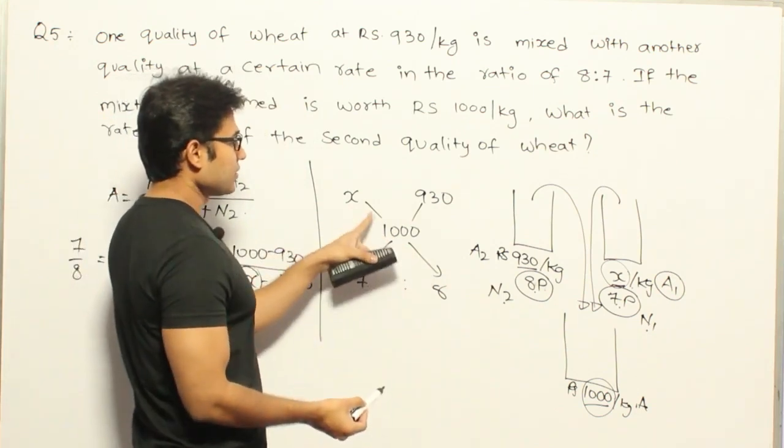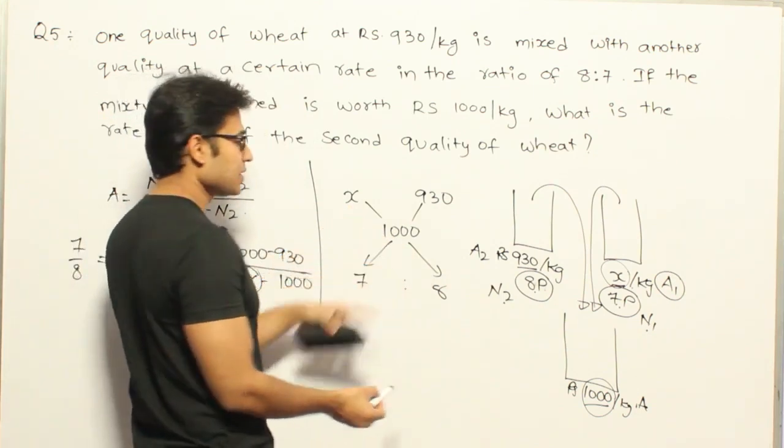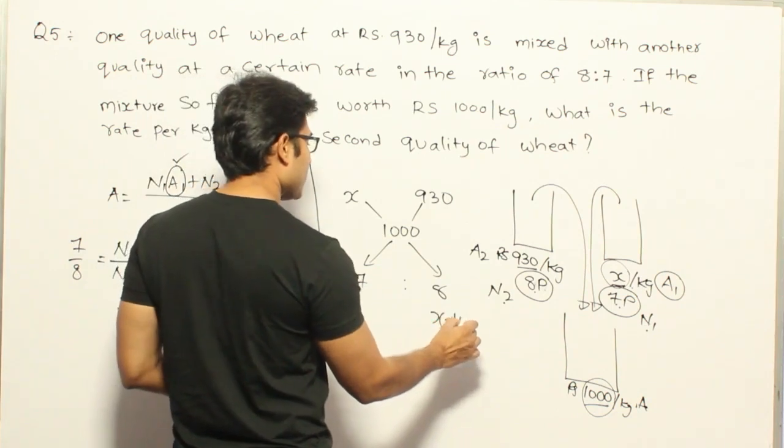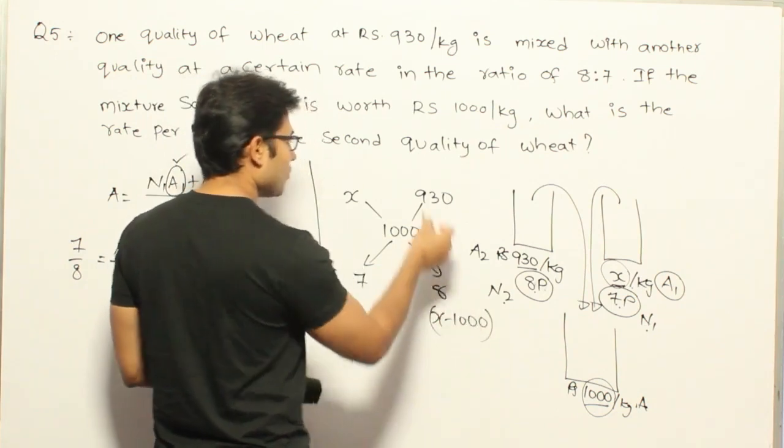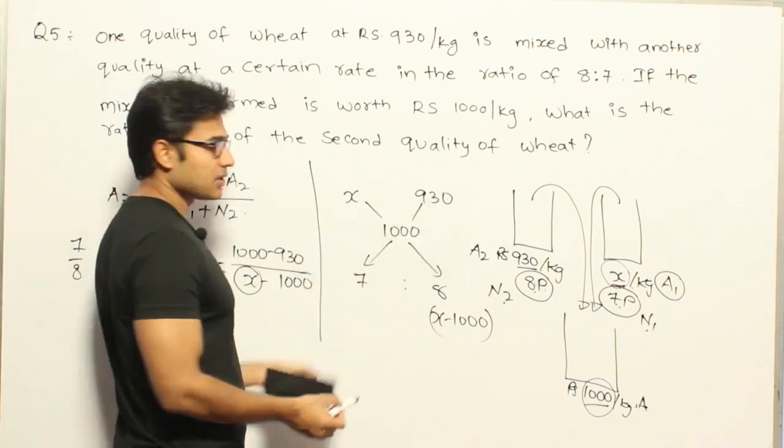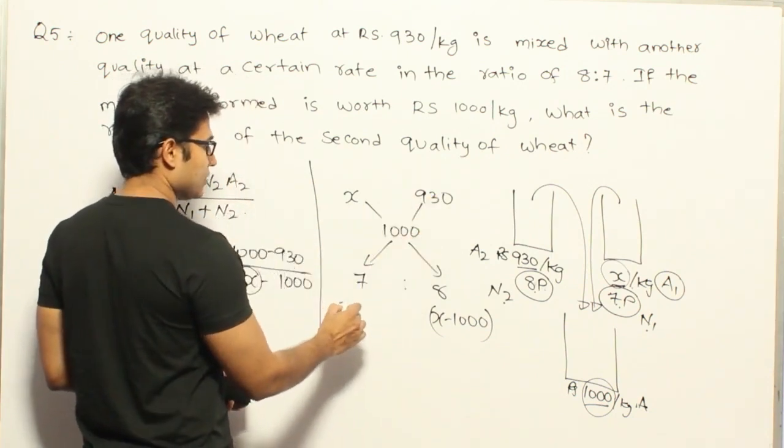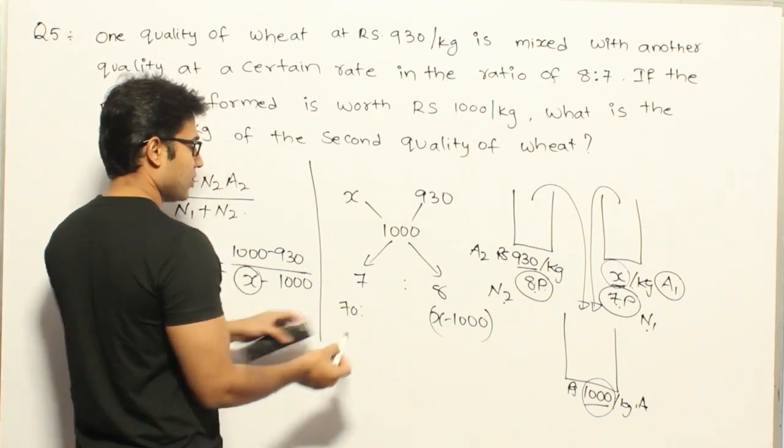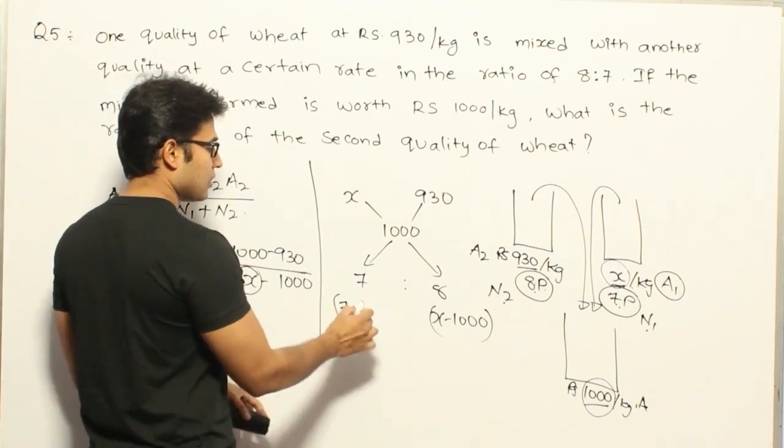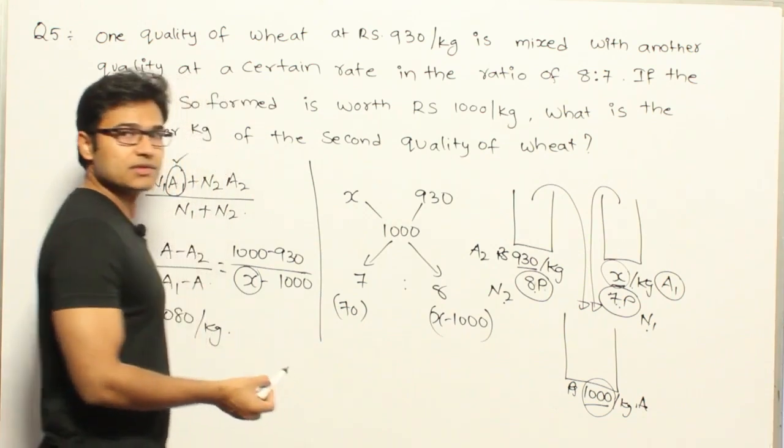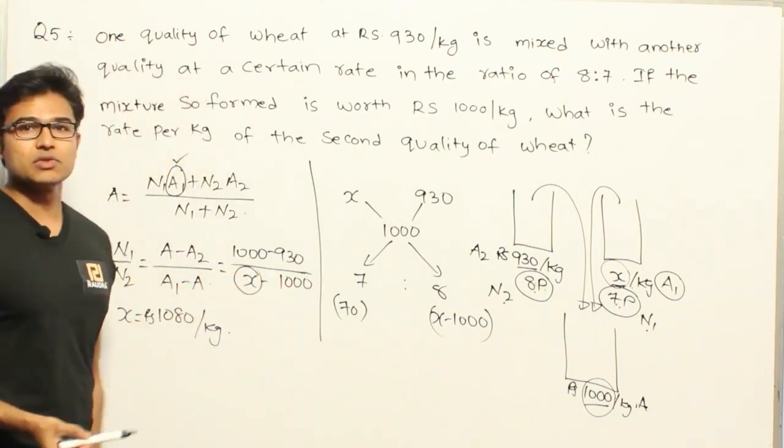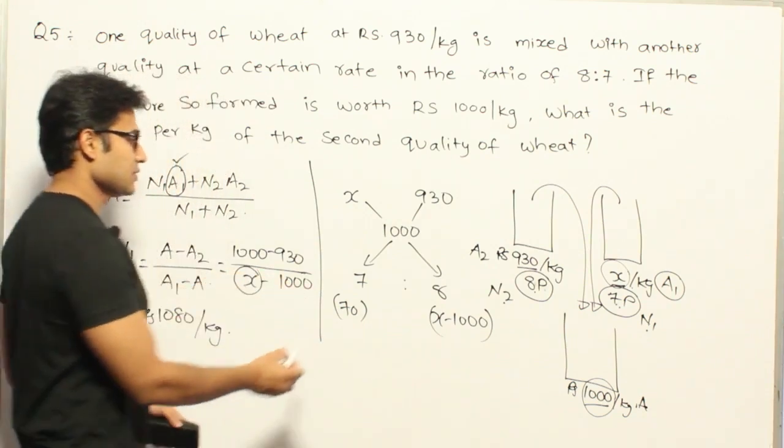Now let us try to find out the difference. Now what is the difference here? So this one is higher, so X minus 1000, and what is the difference here? This one is higher, right? It is 1000 minus 930, which is 70. Therefore, 70 is to X minus 1000 equal to 7 is to 8.